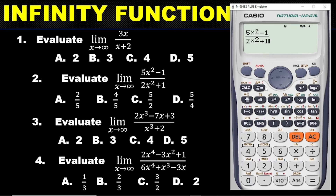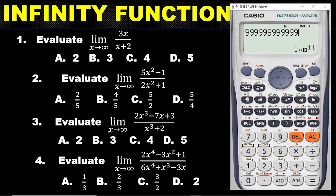Because we are working in an examination, whenever you are done, kindly cross-check what you have entered to be sure it is correct. Once convinced, press the calc button. Since x is approaching infinity, enter 9 twelve times for a very large number, then click the equal sign. The answer is 5 over 2, so the answer for question two is option C.